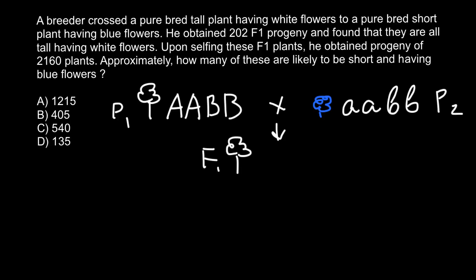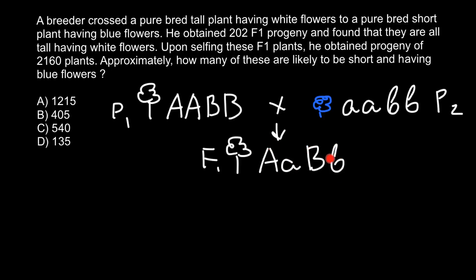So what is the genotype of the F1 generation? The F1 generation would be heterozygous for one trait and also heterozygous for the other trait. Parent one can only give the dominant allele A, and parent two can only give the recessive allele. So we get a dihybrid genotype in F1. All 100% of the plants would be heterozygous for both traits.